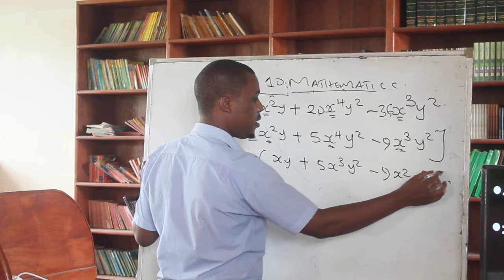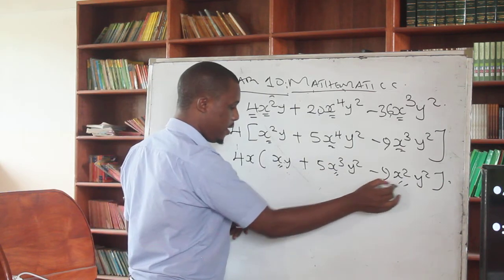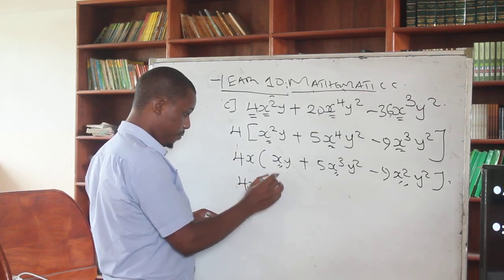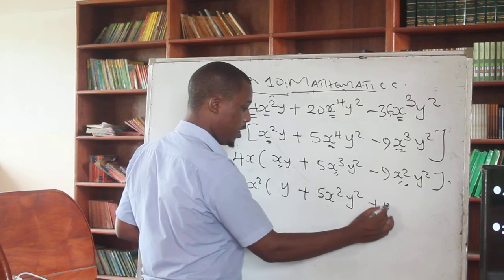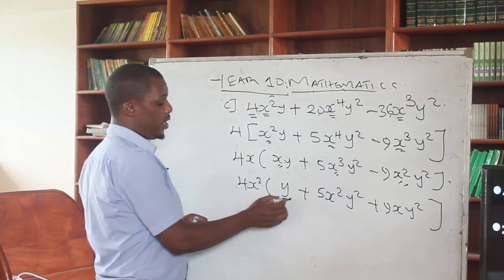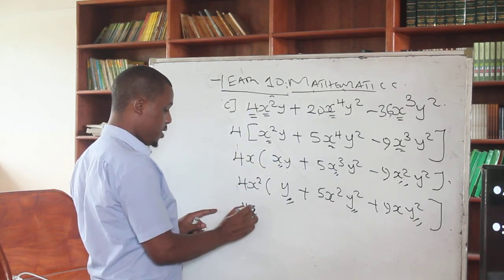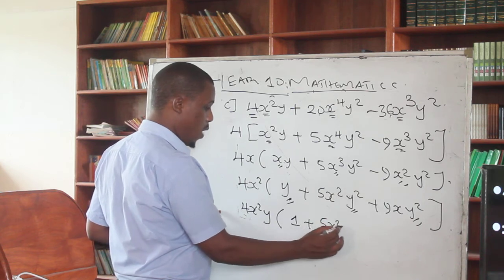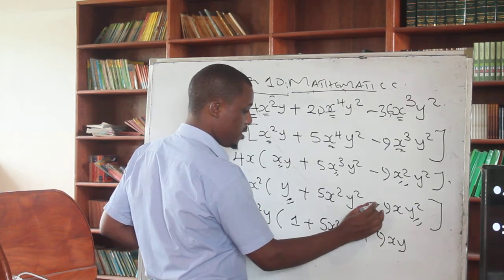We have x² there. We are not yet done, because here there is still an x, here there is also an x, and an x there. So if we remove x again, it is going to be 4x² into bracket: y plus 5x²y² then minus 9x·y². And here we also have a y common — y is common here, here, and there. So moving y outside, multiplying: 4x²y into bracket: 1 plus 5x²y plus 9x, and completing the sign — that is going to be minus.